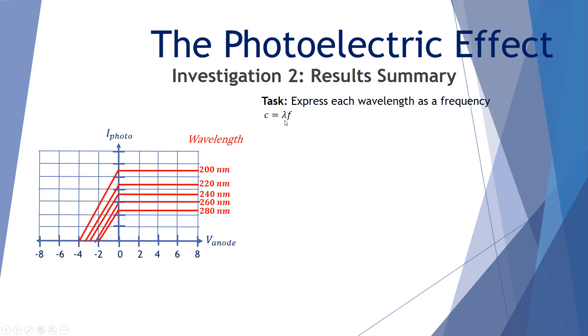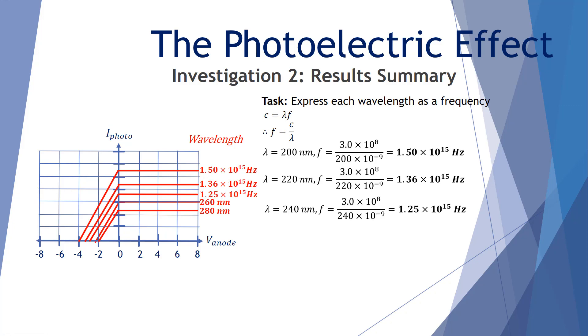So let's try and express each of these wavelengths as a frequency. We know the speed of light is equal to lambda times f. This is effectively the wave equation where our waves are part of the electromagnetic spectrum. So f the frequency will equal the speed of light divided by the wavelength. So let's convert our 200 nanometers, it becomes 1.50 by 10 to the 15 hertz. Our 220 becomes 1.36 by 10 to the 15 hertz and so forth for our 240, our 260, and our 280. So we now have our graph of photocurrent versus voltage anode, and we're looking at the different or various frequencies of light.